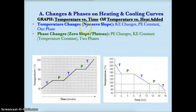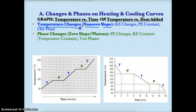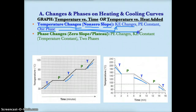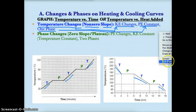So the idea here is: if the slope is non-zero — either positive or negative — then only the temperature changes. Since only temperature changes, kinetic energy changes as well, because kinetic energy is related to temperature. Since you have solid, liquid, and gas (or gas, liquid, and solid), you obviously have only one phase at a time. Since you've only got one phase, the phase is not changing, and since the phase is not changing, the potential energy is constant.